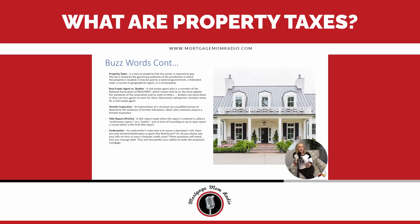If you feel that paying that bill in one big chunk once a year or twice a year is going to be very difficult for you, then you want to impound those property taxes and have an extra escrow payment as part of your mortgage payment — your T in the PITI: principal, interest, taxes.